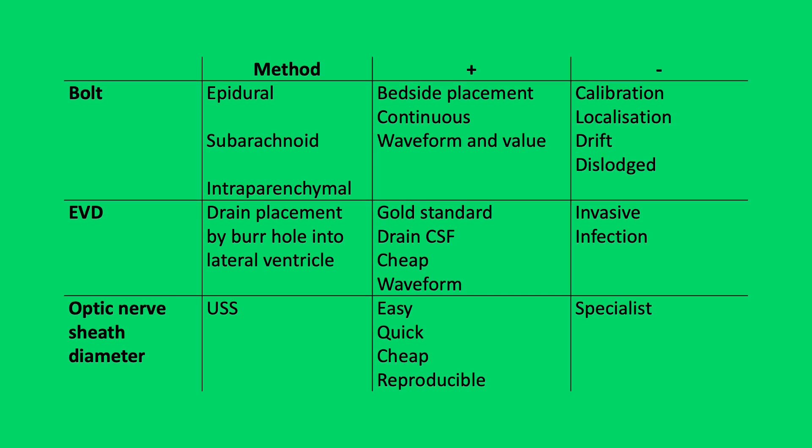The methods to assess ICP are broad and can be split into invasive and non-invasive methods. Common methods include ICP bolt, external ventricular drain (EVD), and optic nerve sheath diameter ultrasound assessment. For EVD, the drain is placed via a burr hole into the lateral ventricle, and this remains the gold standard. You can determine ICP pressure as well as drain CSF with a clear waveform. However, EVDs are invasive and carry a risk of infection.